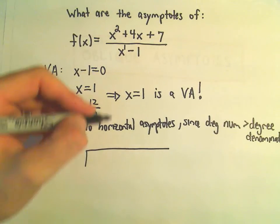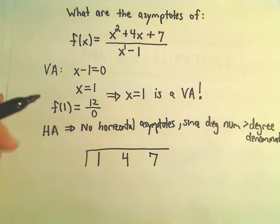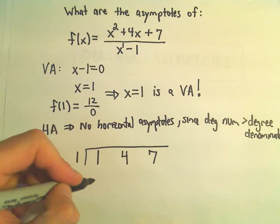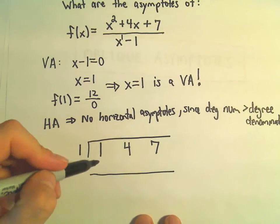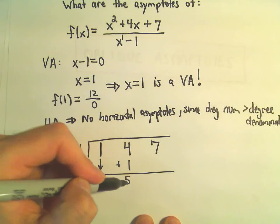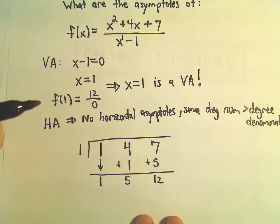So there's our one x squared, our positive four x, and our positive seven. Again, we see x minus one, but we use plus one. So if I drop the one down, one times one is one, and we add, we get five, one times five is five. This will give us a twelve.